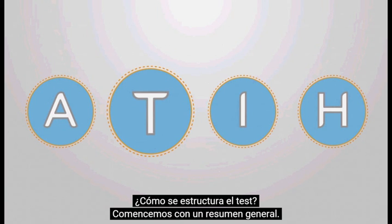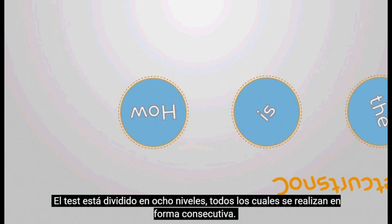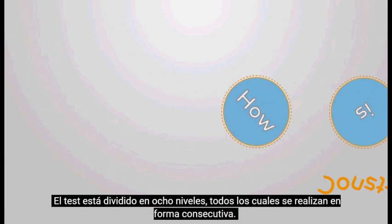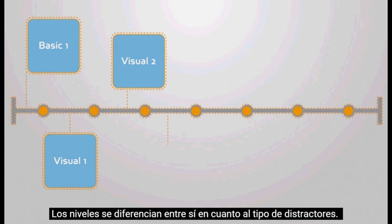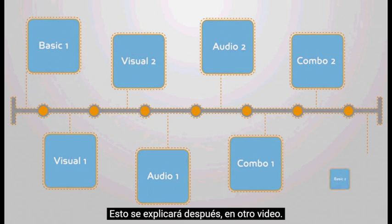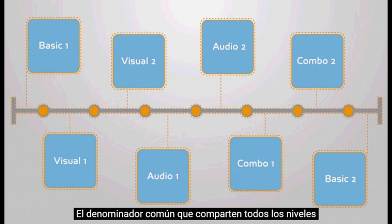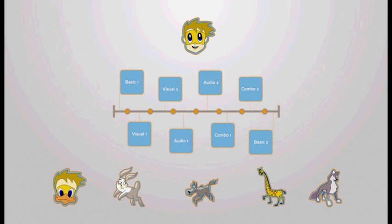How is the test constructed? The test is divided into eight levels which are all performed consecutively. The levels differ from each other in the type of their distractors, which will be explained in greater depth in a later film. The common denominator for all levels are the target and non-target elements appearing in the center of the screen and the pattern in which they appear.